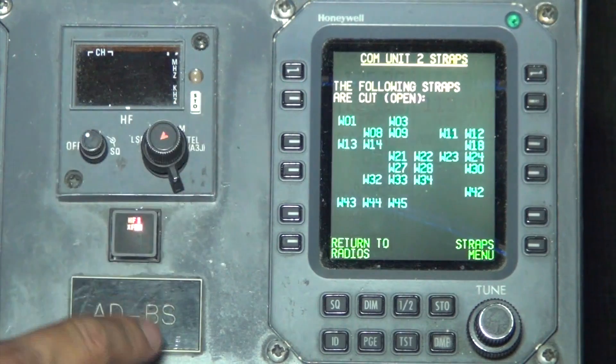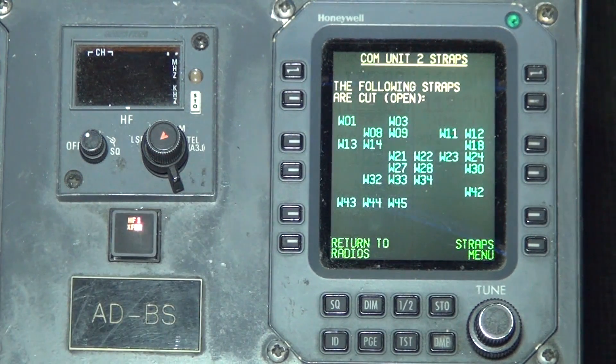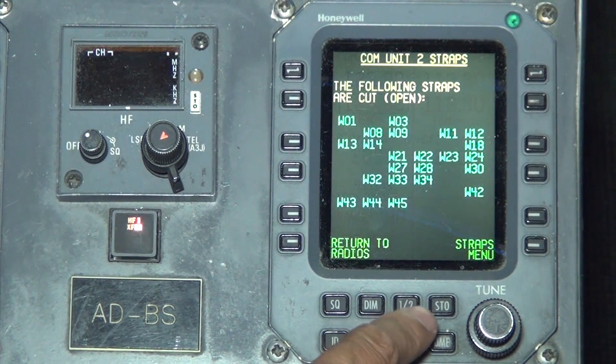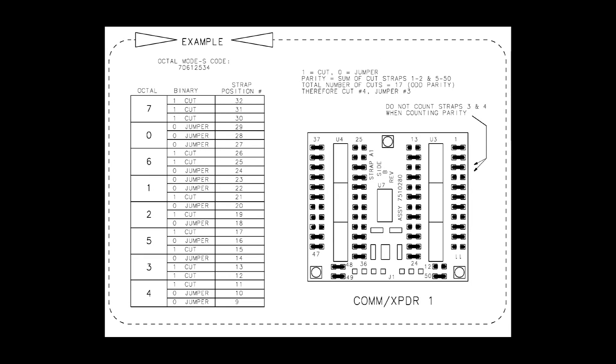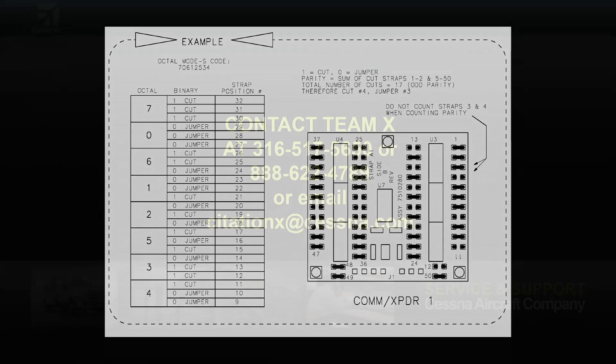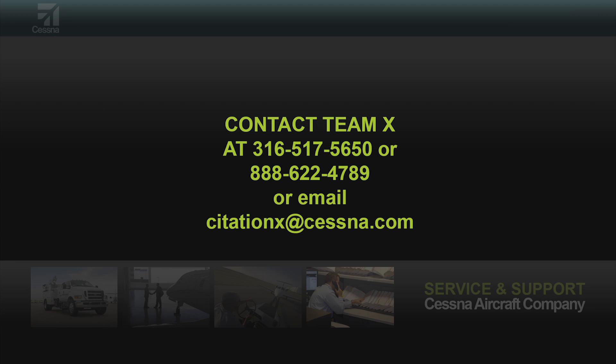This will display the COM unit strapping, which also includes the transponder strapping. Here is a view of the transponder configuration strapping. If you have any questions, contact Team 10 at 316-517-5650 or 888-622-4789, or email citation10 at Cessna.com.